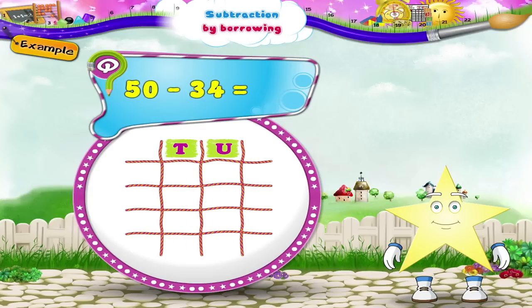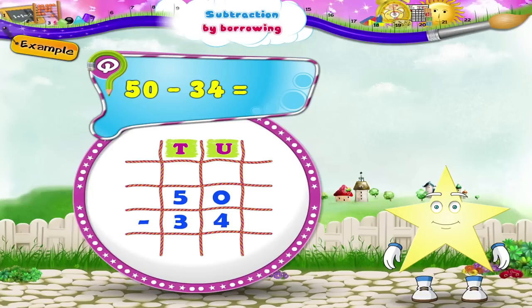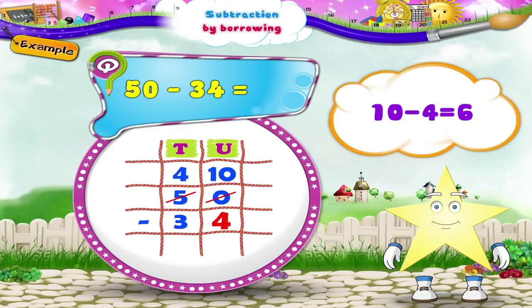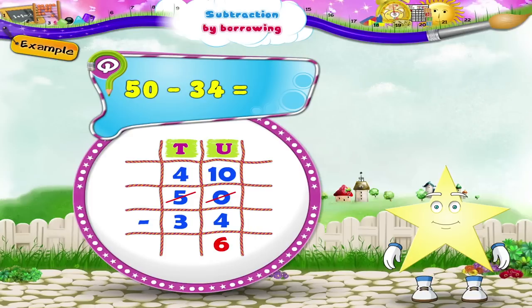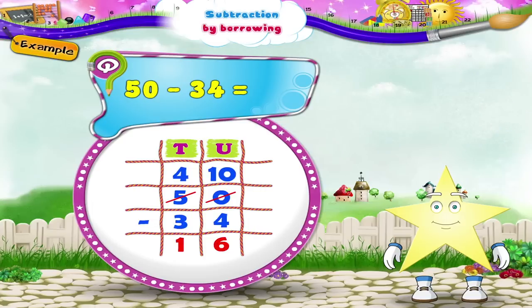Here's the next example, Sturry: subtract fifty minus thirty-four. Here we have to subtract four units from zero units — we cannot solve this. So we shall carry one ten from five tens to zero units. We get four tens, ten units minus three tens, four units. Now we shall subtract four units from ten units — we get six units. On subtracting the tens, four tens minus three tens is equal to one ten. So fifty minus thirty-four equals sixteen.